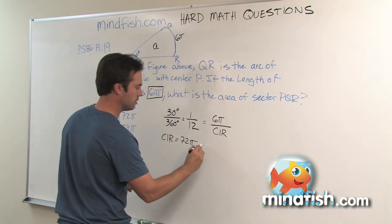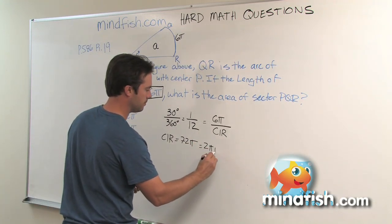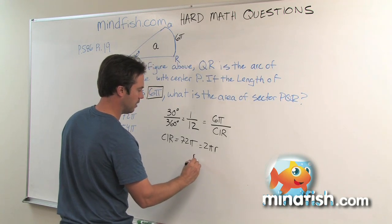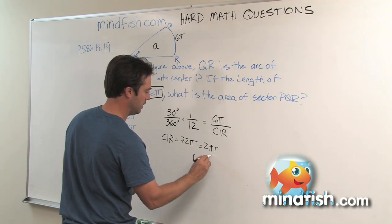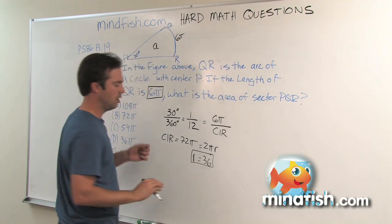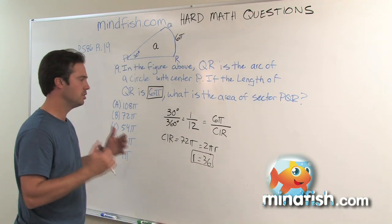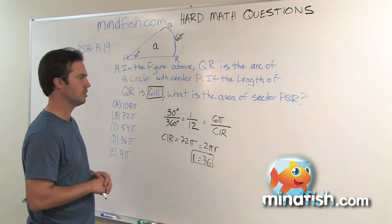We know that the circumference of a circle is 2πr and so now we know that r is 36. This is really what you're always driving for. You're always trying to get your radius, because once you have your radius, you can really move in any direction you want.